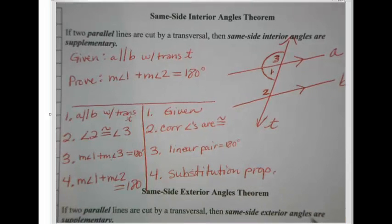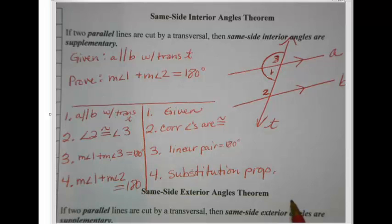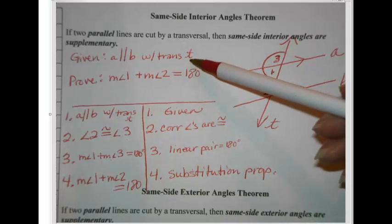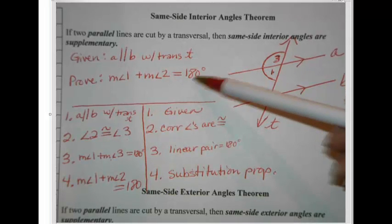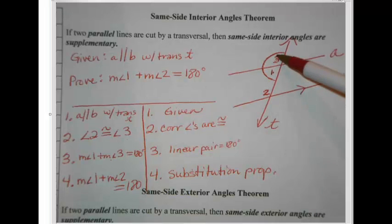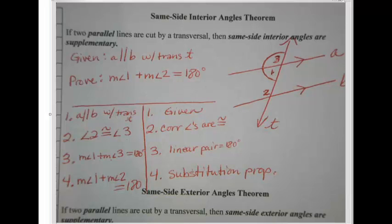That's how you prove these things. Your job is to try the same-side exterior angles theorem proof. I know you can write the given, write a prove statement, and get a picture. The strategy is to put an angle 3 in your picture — make it correspond to either angle 1 or angle 2. You can use this as a guideline, but try it on your own and we'll check it in class.